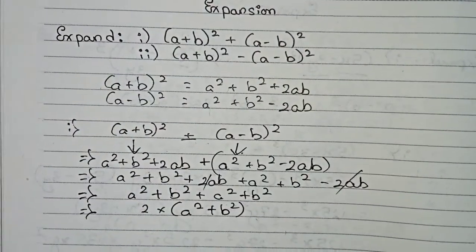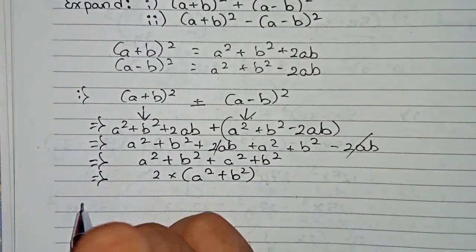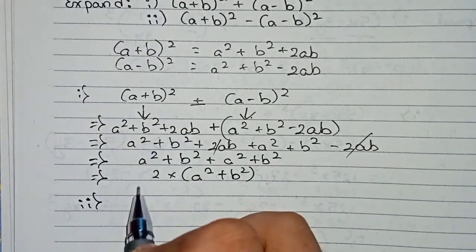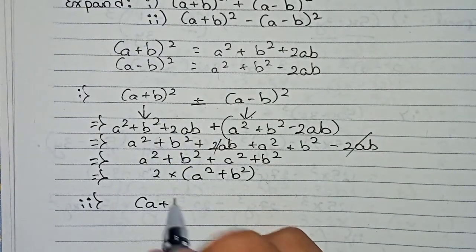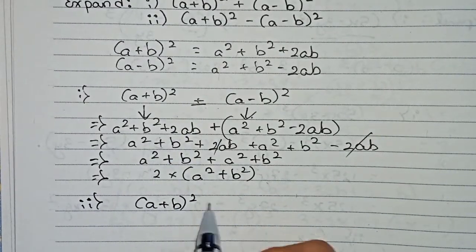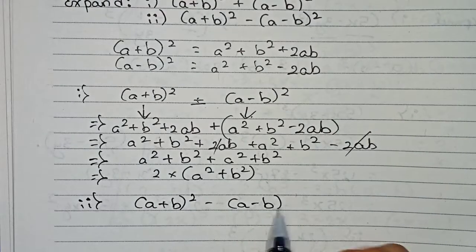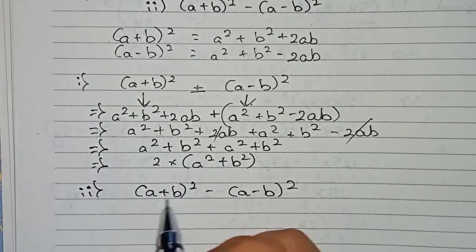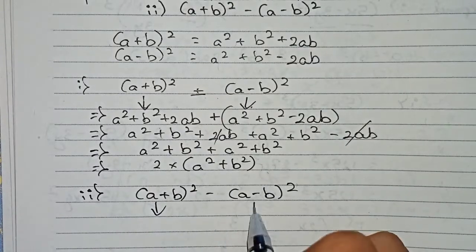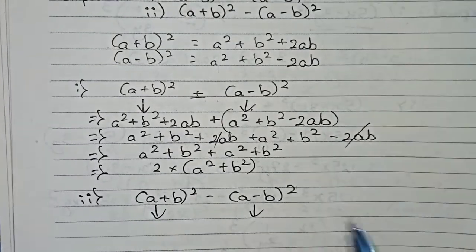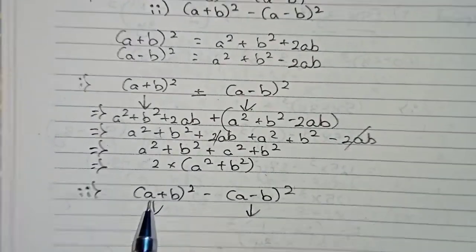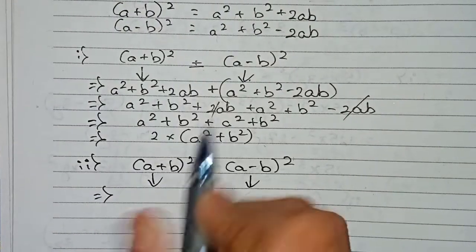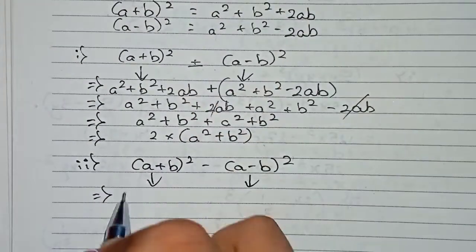Now I move to the next question: (a + b)² − (a − b)². For this question also, you will do it in two parts. For the first part, (a + b)², the formula is a² + b² + 2ab.